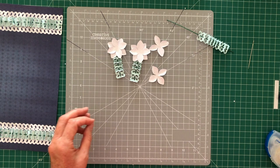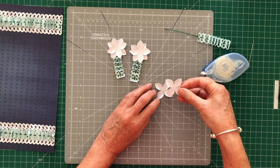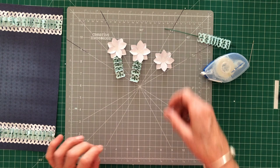So to make the flowers I just glue two together. So in the middle of one, a little bit of tape runner. And just line it up in the center. And there's our little flower.